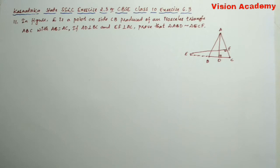In figure, E is a point on side CB produced of an isosceles triangle ABC with AB is equal to AC. If AD is perpendicular to BC and EF is perpendicular to AC, prove that triangle ABD is similar to triangle ECF.